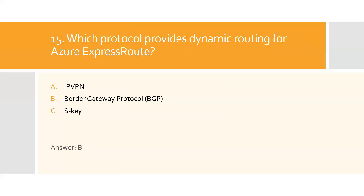Question fifteen: Which protocol provides dynamic routing for Azure ExpressRoute? A) IP VPN, B) Border Gateway Protocol, C) SD-WAN. Option B is the right answer. Border Gateway Protocol is an industry-standard dynamic routing protocol that can exchange routes between your on-premises network, your instances in Azure, and Microsoft public addresses.